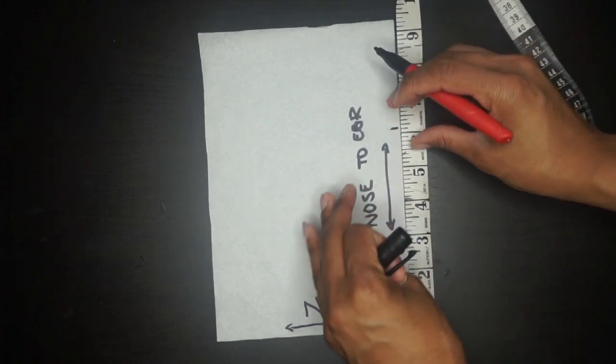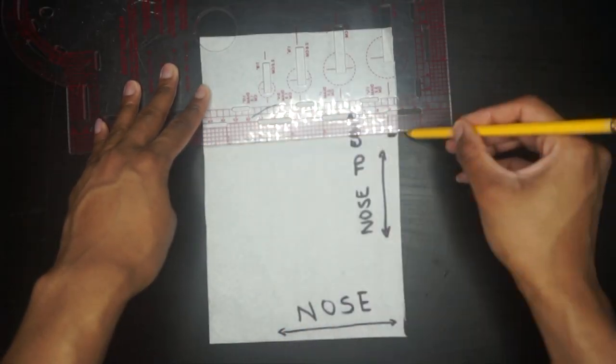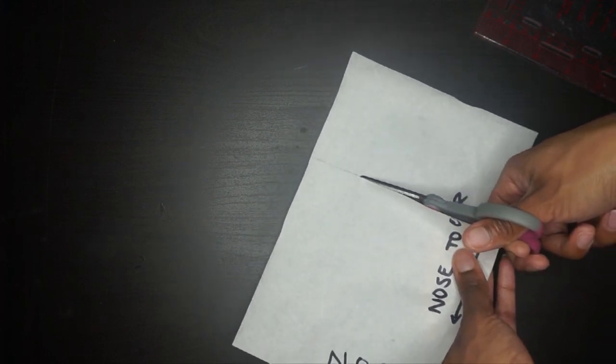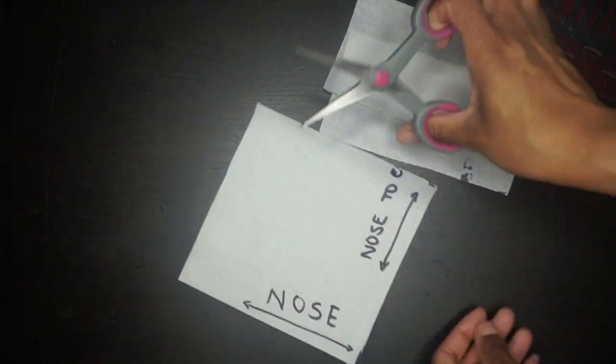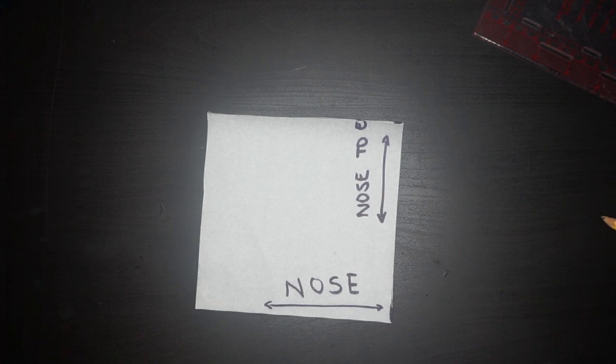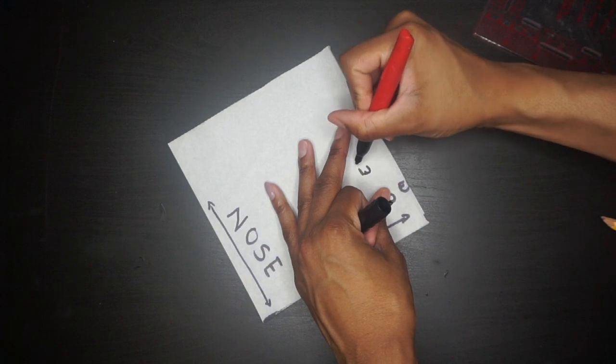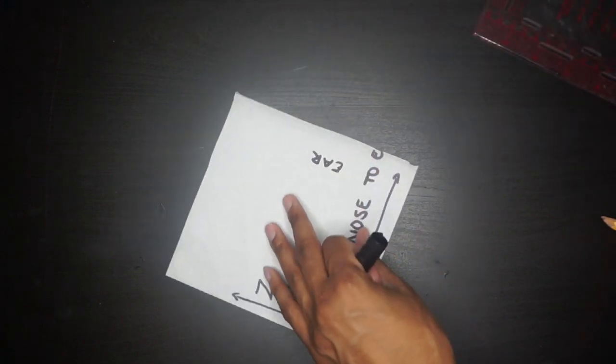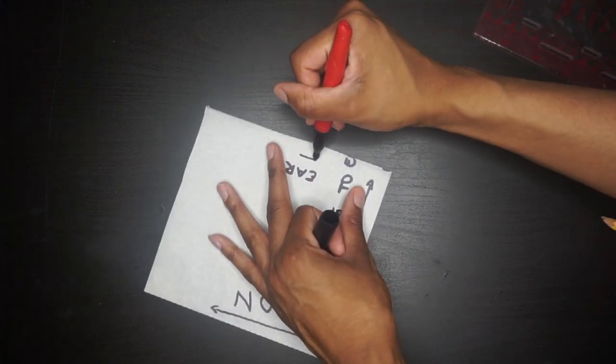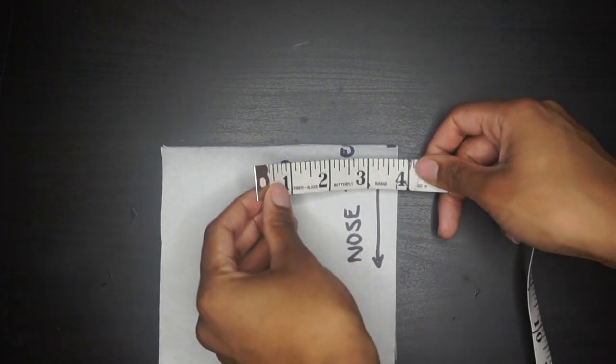We're going to mark six inches, do a straight line across and cut that piece off. For the last measurement, it's going to be our ear or sideburn measurement. We're actually not going to cut anything off yet, we're just going to do the marking. That measurement I had gotten was three and a half inches.